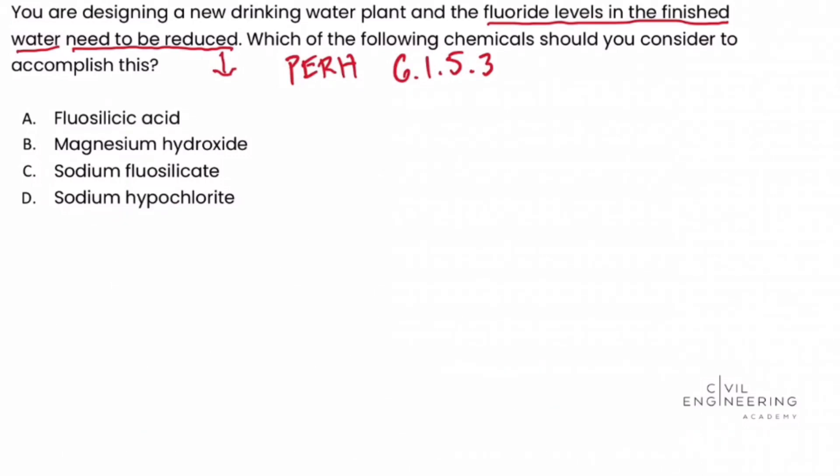We'll first start off with the fluosilic acid. We see that that is used for fluoridation. Fluoridation refers to the process of introducing fluoride into the water or increasing the fluoride level. So we don't want to increase it, we want to reduce it. So fluosilic acid is not a viable answer or option for this situation.